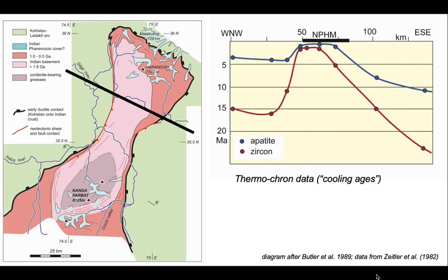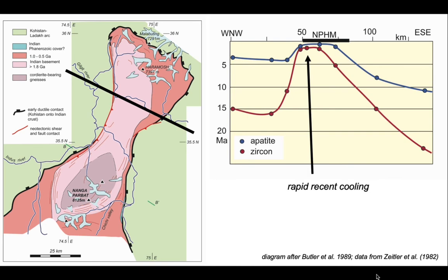Let's join up the dots to show the two profiles. In the Nanga Parbat-Haramosh Massif, not only was the cooling very rapid, but it's also recent — young cooling. And those profiles are asymmetric: the most rapid recent cooling was on the western side. Of course, cooling represents exhumation — the bringing of rocks to the surface through erosion. We can therefore deduce that rapid cooling means rapid erosion, and young cooling ages represent active exhumation and active erosion. A tectonic origin for this asymmetry should be found on the western side of the Nanga Parbat-Haramosh Massif.